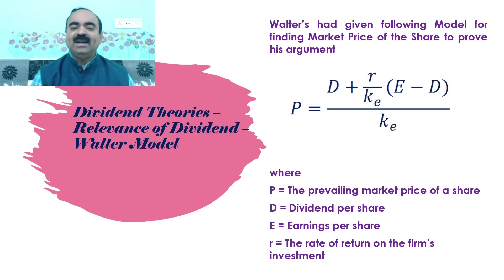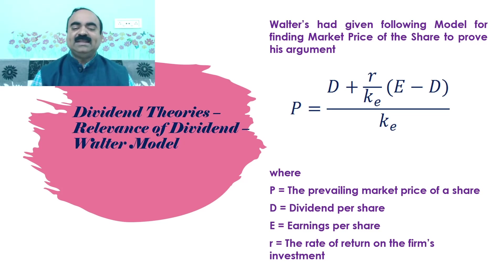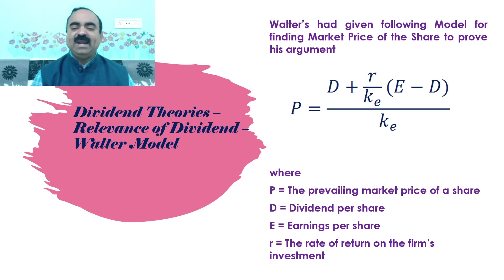Walter had given the following model for finding the market price of the share to prove his argument: P = D + (R/K) × (E − D) / K, where P is the prevailing market price of a share, D is dividend per share, E is earnings per share, and R is the rate of return on the firm's investment.